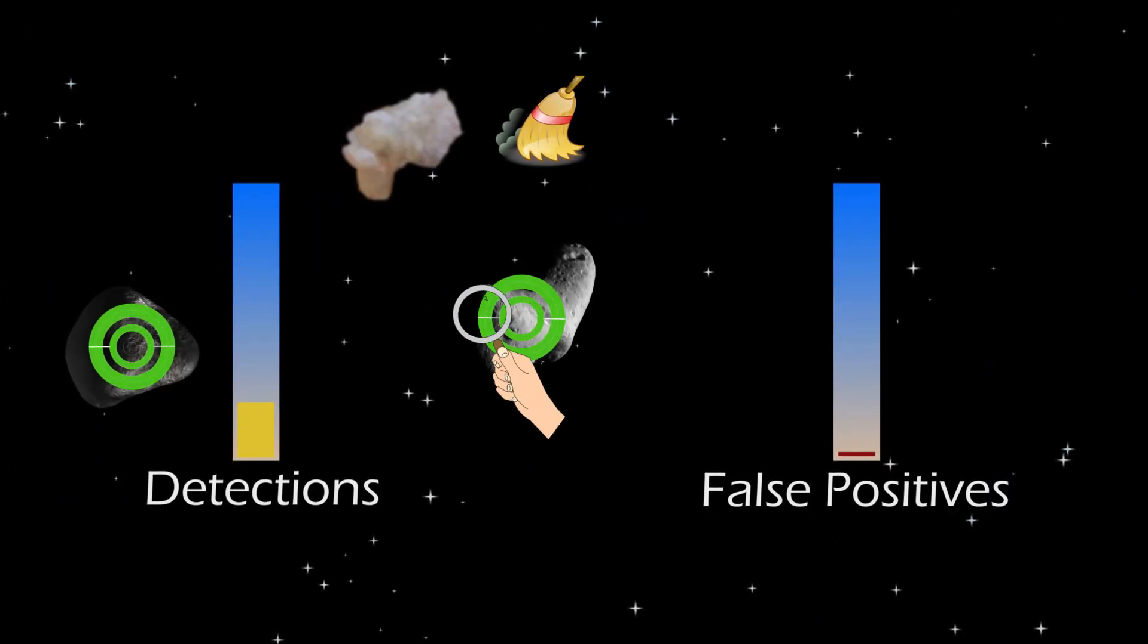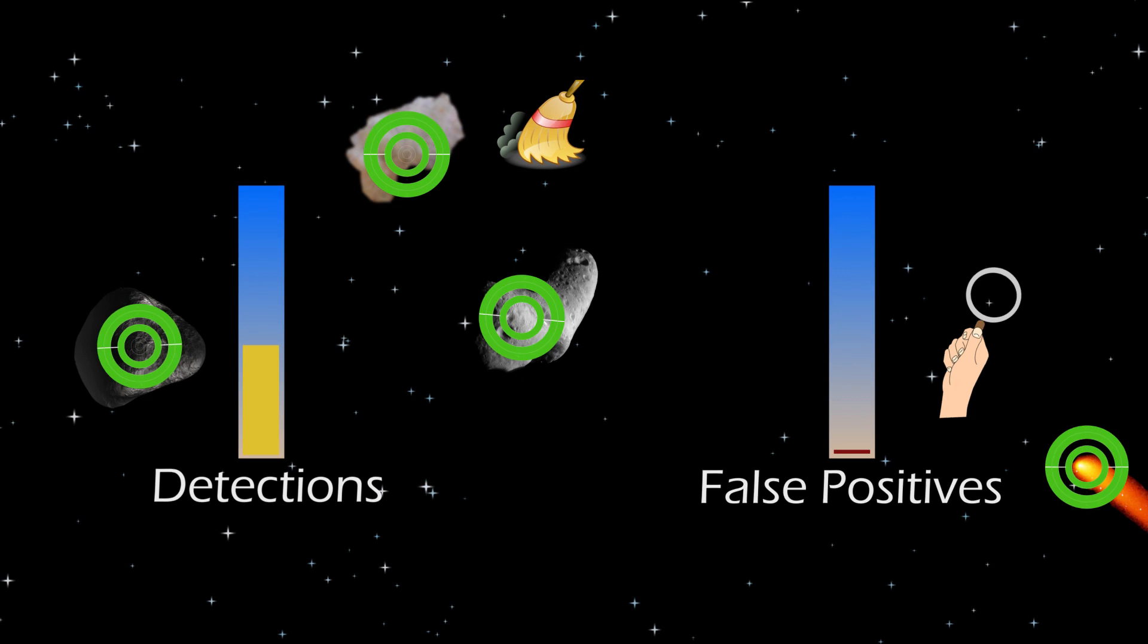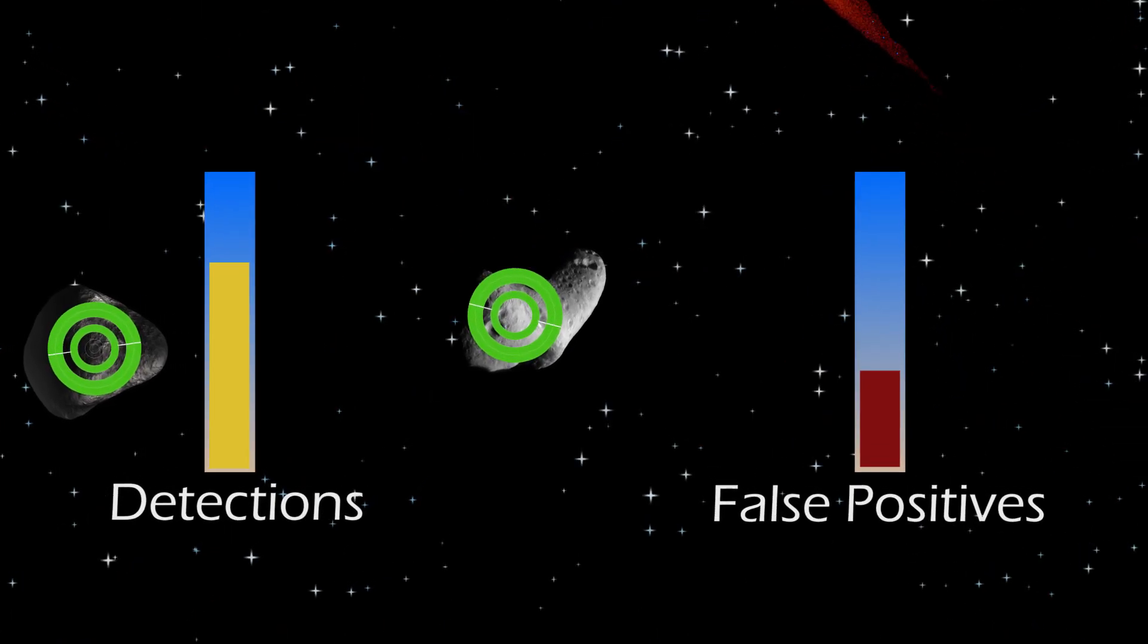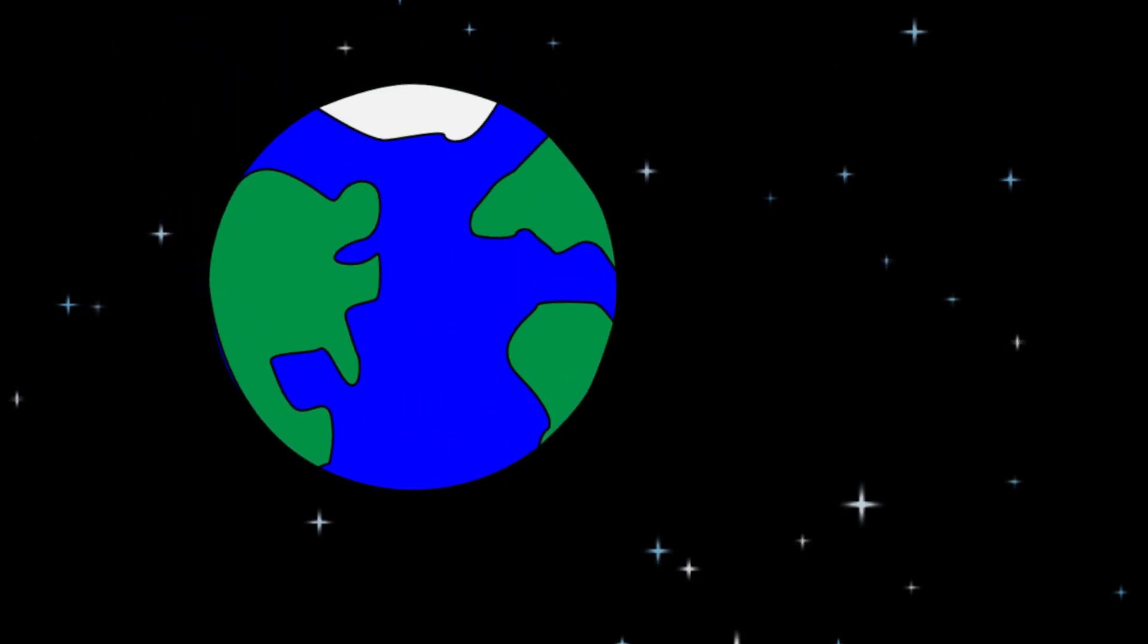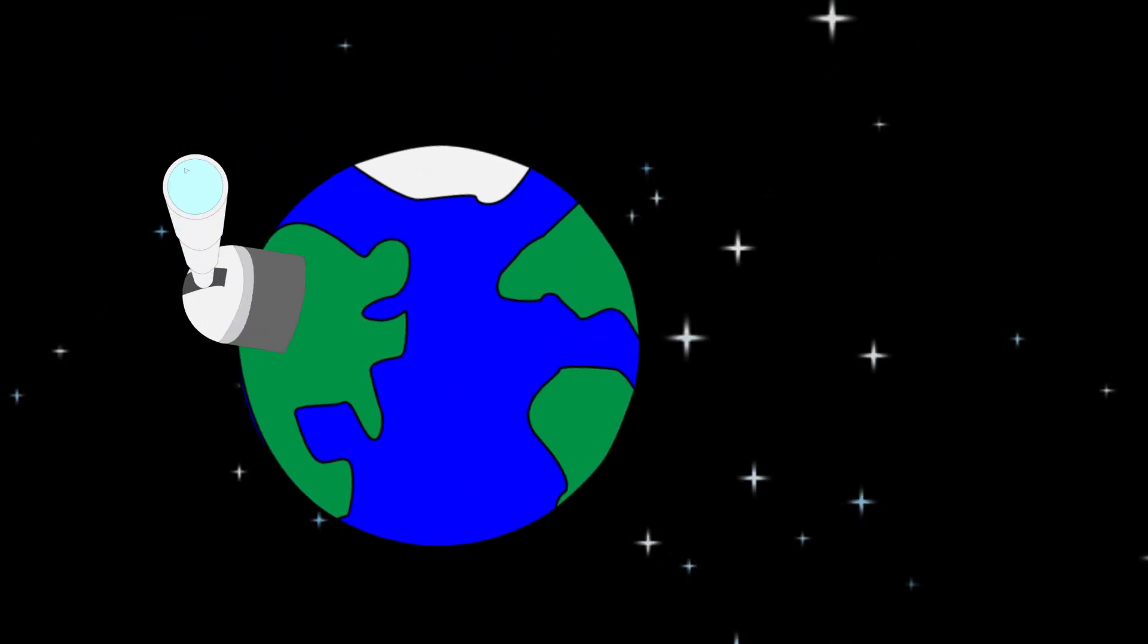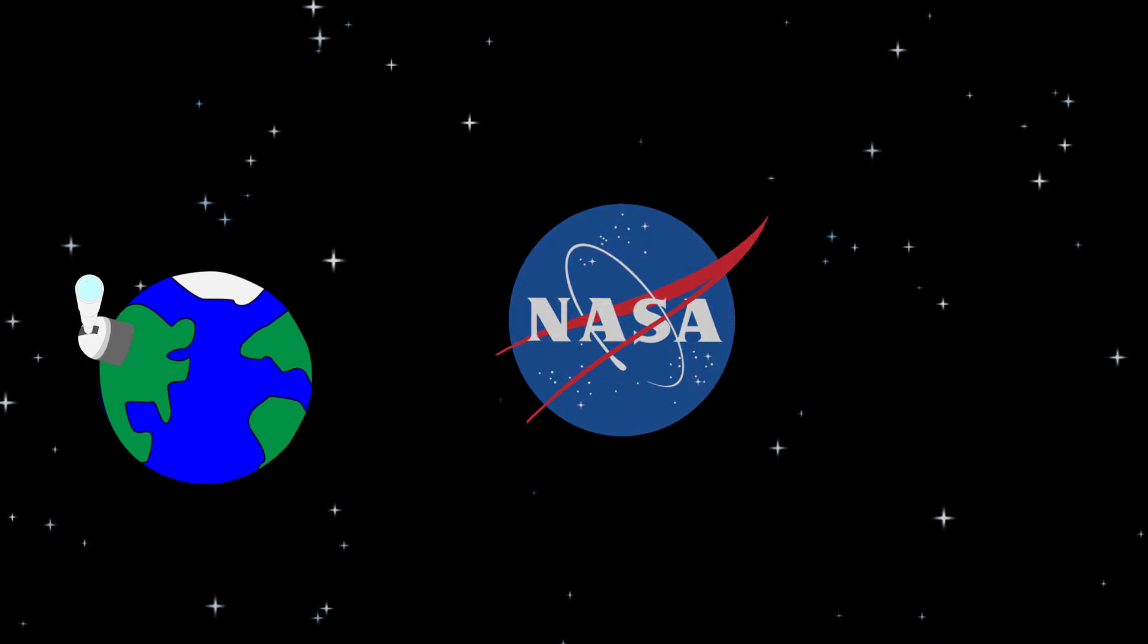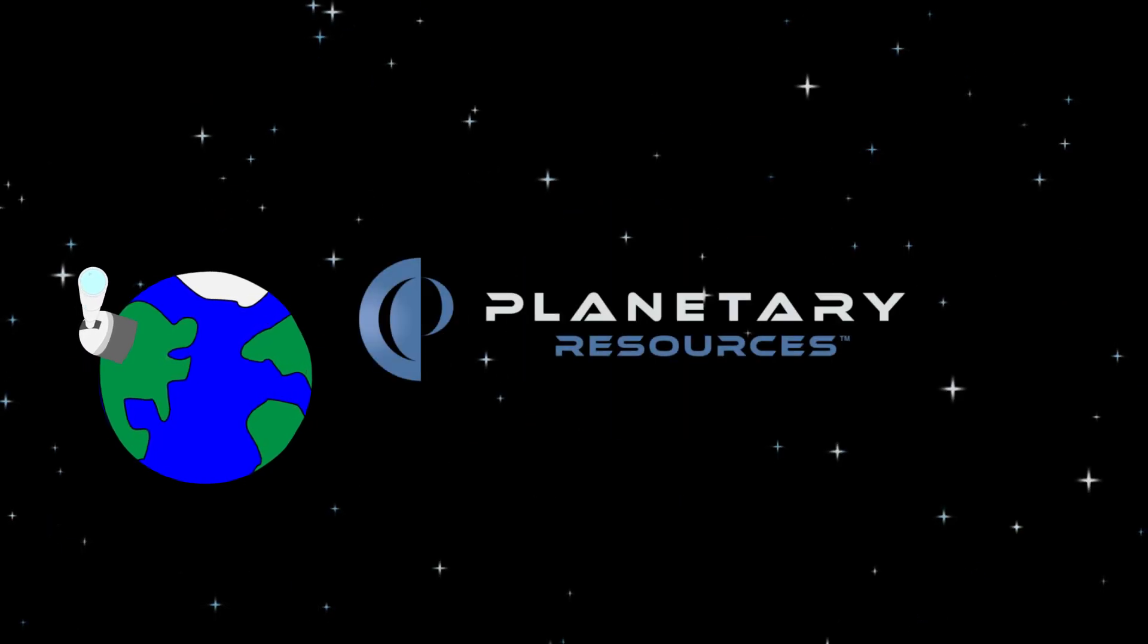We need your help to improve the algorithms that are used to detect asteroids without grossly increasing the number of false positives. During these challenges, we will ask you to create algorithms that mimic how humans sort through data to discover asteroids so organizations like NASA and Planetary Resources can rely on having the most accurate data in the world.